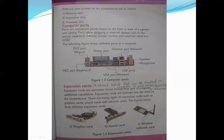Different types of slots include memory slots, expansion slots, and processor slots. Computer ports are connection points found on the front and back of a system unit. Ports allow plugging in external devices such as the mouse, keyboard, monitor, and printer.